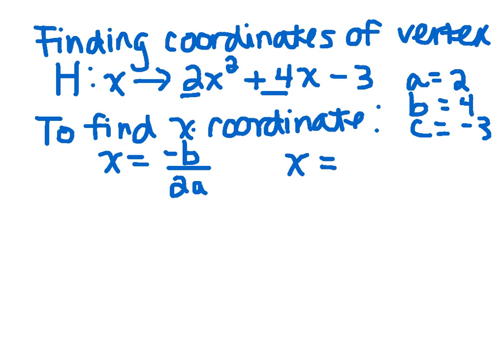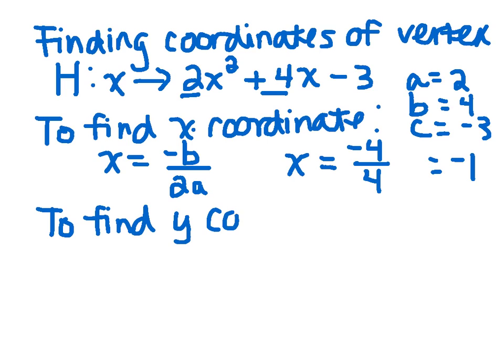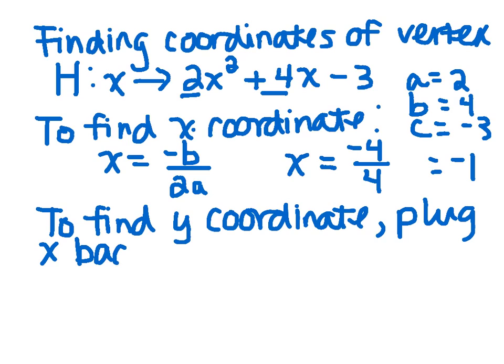Using our formula, the x-coordinate equals the opposite of b, b is 4, so the opposite of that is negative 4, divided by 2 times a, a is 2, times 2 is 4, so x is equal to negative 1. Just like I always have done, we have always done to find the y that goes with an x, we simply plug it in. To find the y-coordinate, plug x back into the function.